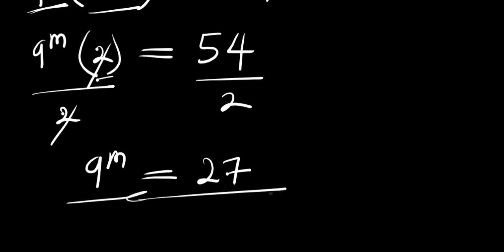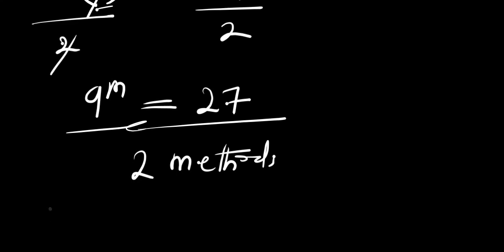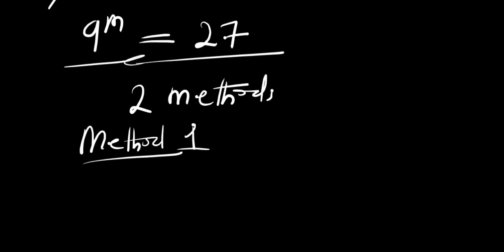Now at this point we can solve this exponential equation for m using two methods. I'm going to start with Method 1. Recall we have 9 power m equals 27.